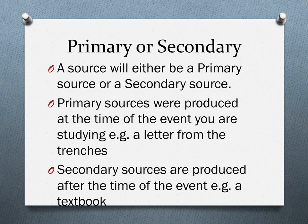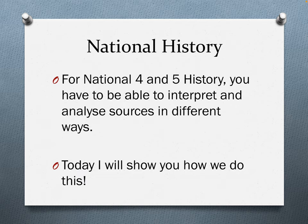A source will either be primary or secondary. A primary source is a source that was produced at the time of the event you're studying — for example, a letter from the trenches. Secondary sources are produced after the time of the event — for example, a textbook that was produced 10 or 20 years later. For National 4 and 5 history, you have to be able to interpret and analyse sources in different ways. Today I'm going to show you how to do this.